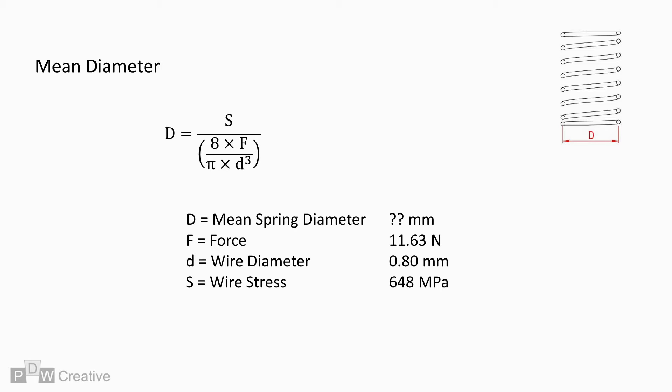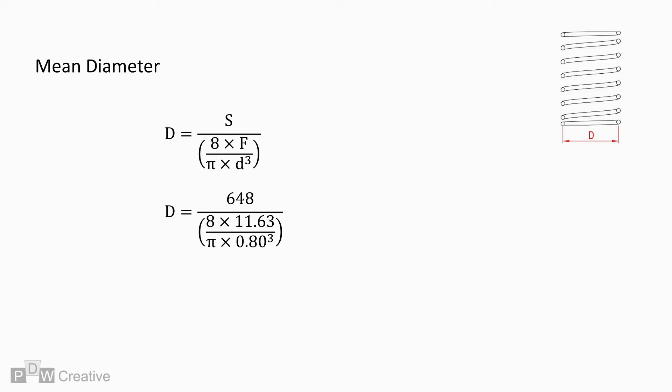And the wire stress will be 648 MPa. Plug these variables into the equation as shown and we get an optimal mean diameter of 11.20 millimeters.